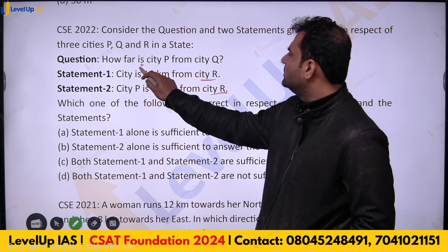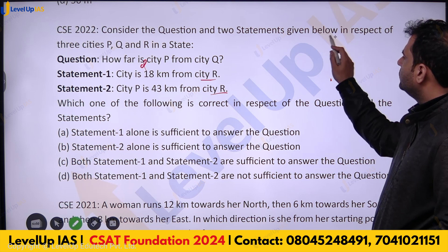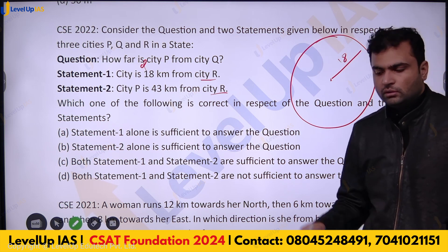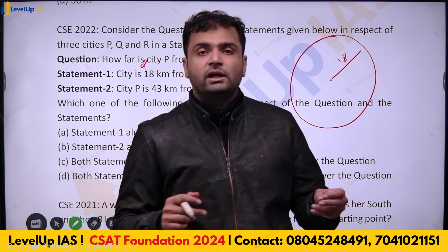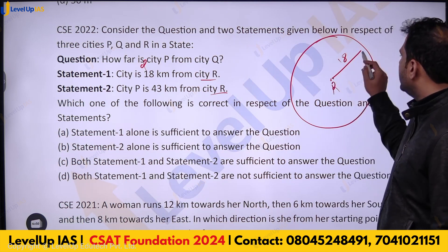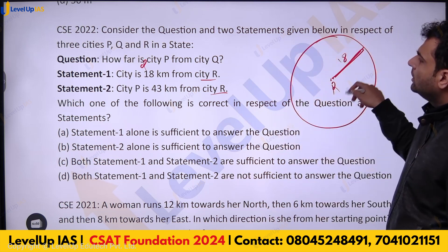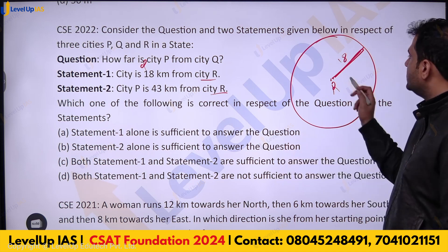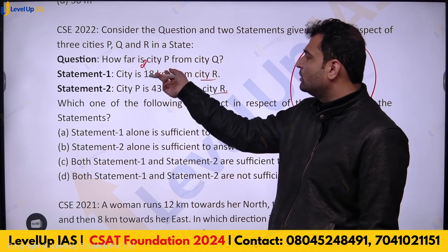Statement one: City Q is 18 kilometers from city R. So city Q could be anywhere on a circle of radius 18 centered at R, because all points on this circle are at a distance of 18 km from R. Statement one alone is not sufficient because there is no information about P.